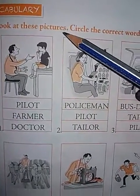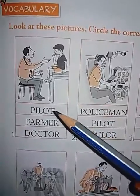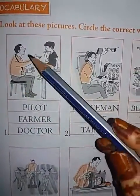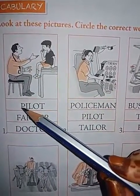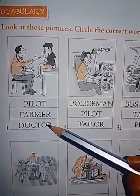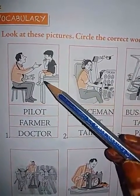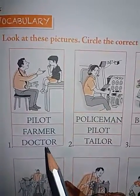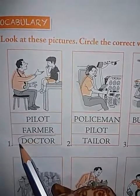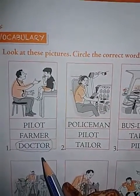Look at these pictures and circle the correct word. Can you identify who is this person? What is he called? Pilot, farmer or doctor? The one who checks the patient is called — yes, very good — Doctor. Say the spelling of doctor: D-O-C-T-O-R. Doctor. Very good.